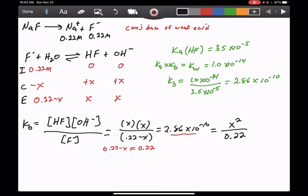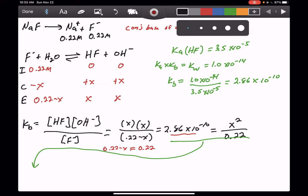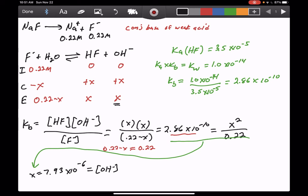When we solve that problem we get a value of x equal to 7.93 times 10 to the minus 6. We need to look back at our ICE box to see what x really equals. As far as acid base stuff is concerned, x is equal to the concentration of OH minus.